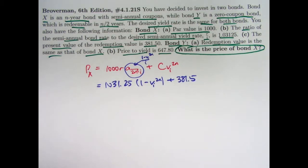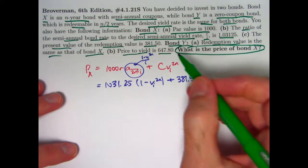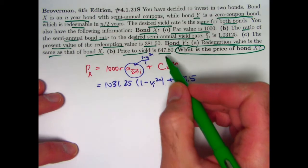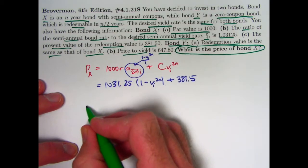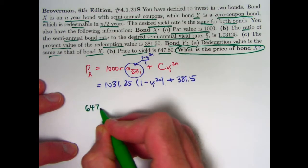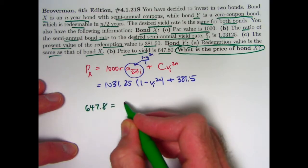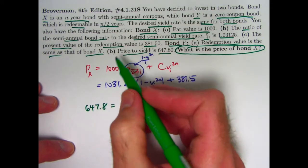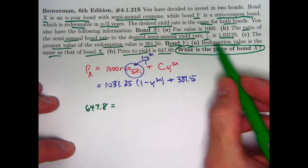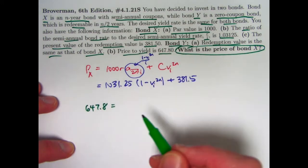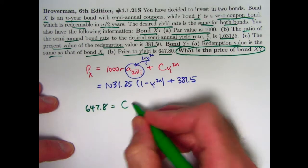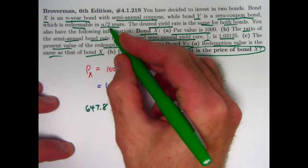We probably do need to use the rest of the information here. For bond Y, again, the price to yield is 647.8. That's the present value of the future redemption amount, 647.8. The redemption amount for bond Y is the same as for bond X. That's part A of the information for bond Y. It's also C.